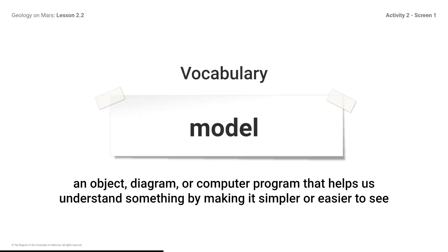Vocabulary — Model: An object, diagram, or computer program that helps us understand something by making it simpler or easier to see. Models can represent ideas about the natural world. Gurria's model represented his idea of how novae on Venus were formed.